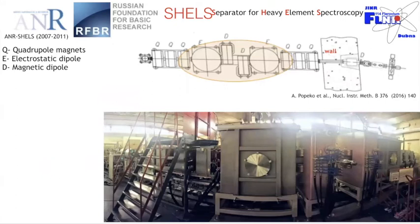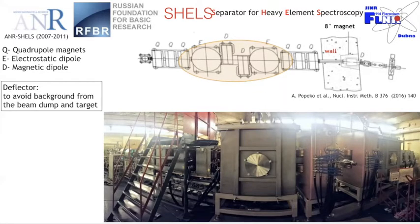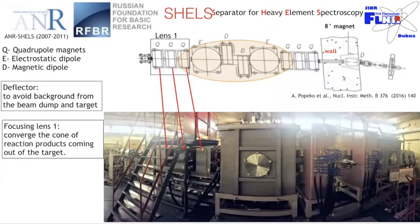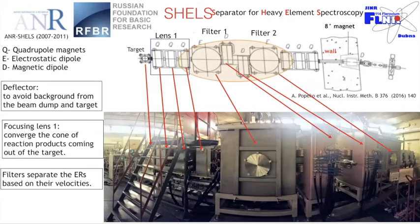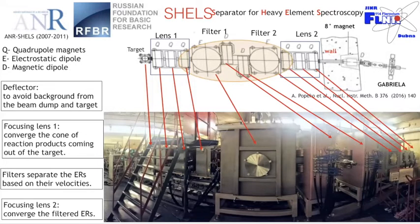We use the separator called SHIP to filter the evaporation residues from the undesired background. The separator consists of two identical velocity filters and two focusing lenses. The first focusing lens focuses the cone of reaction products coming out of the target into the filters where they get separated based on velocities. The second focusing lens then focuses the filtered evaporation residues onto the detection system called GABRIELA.